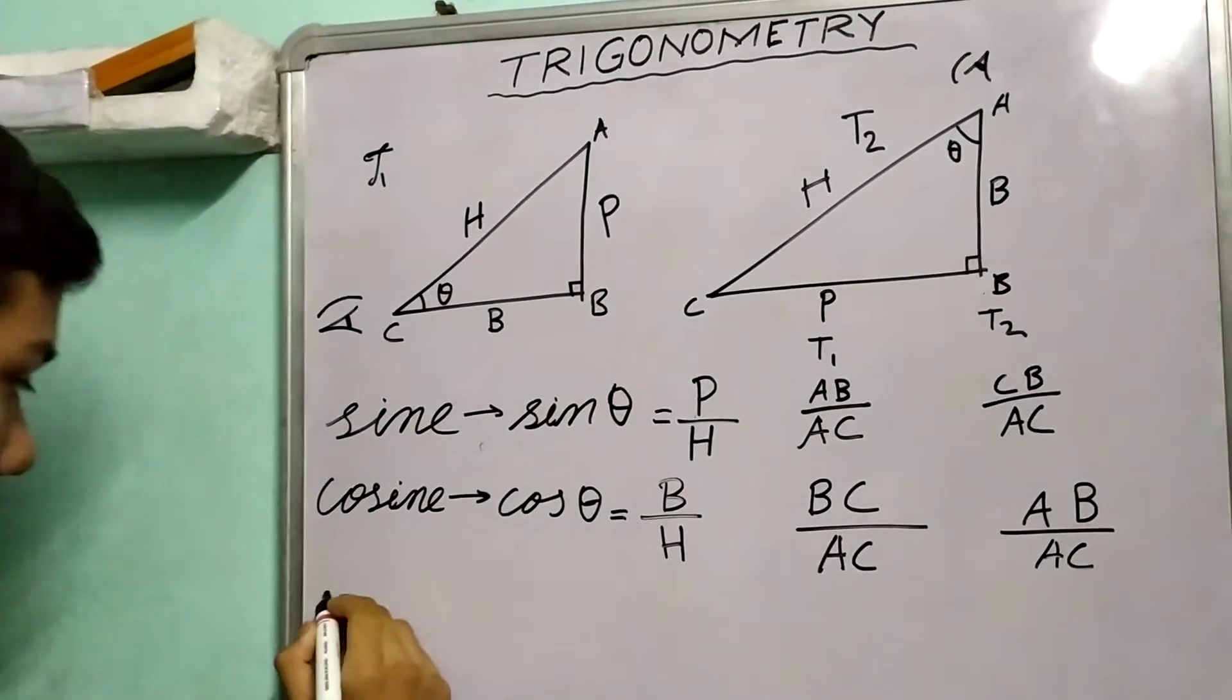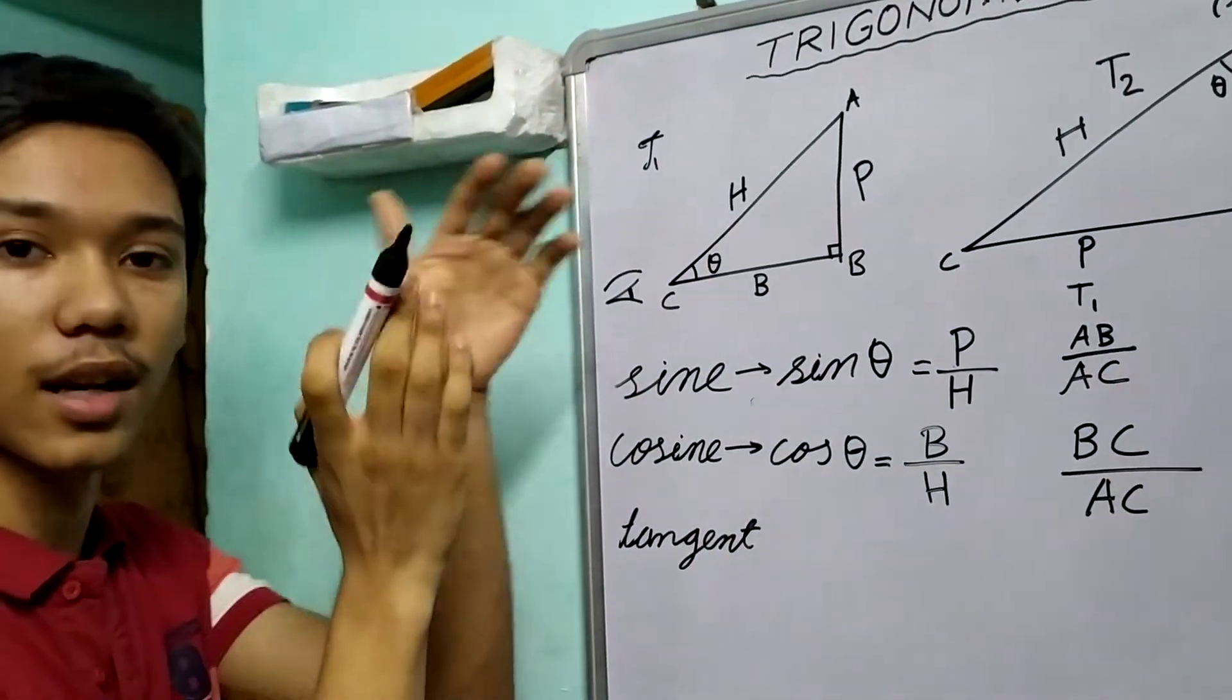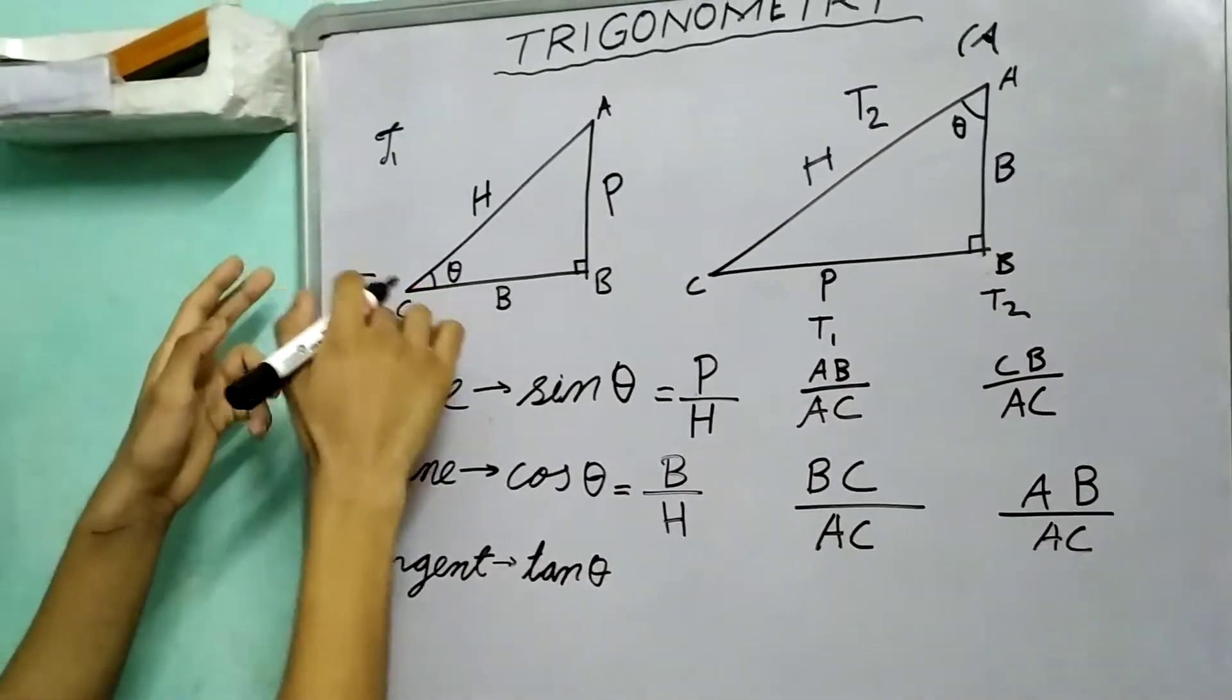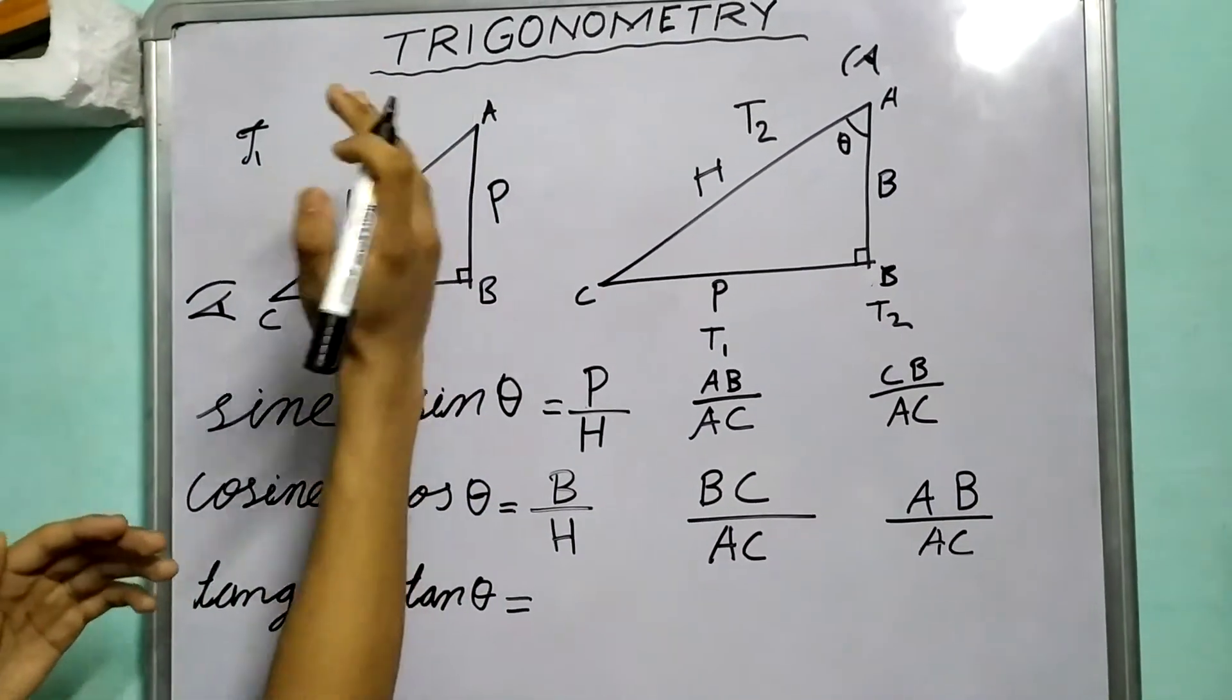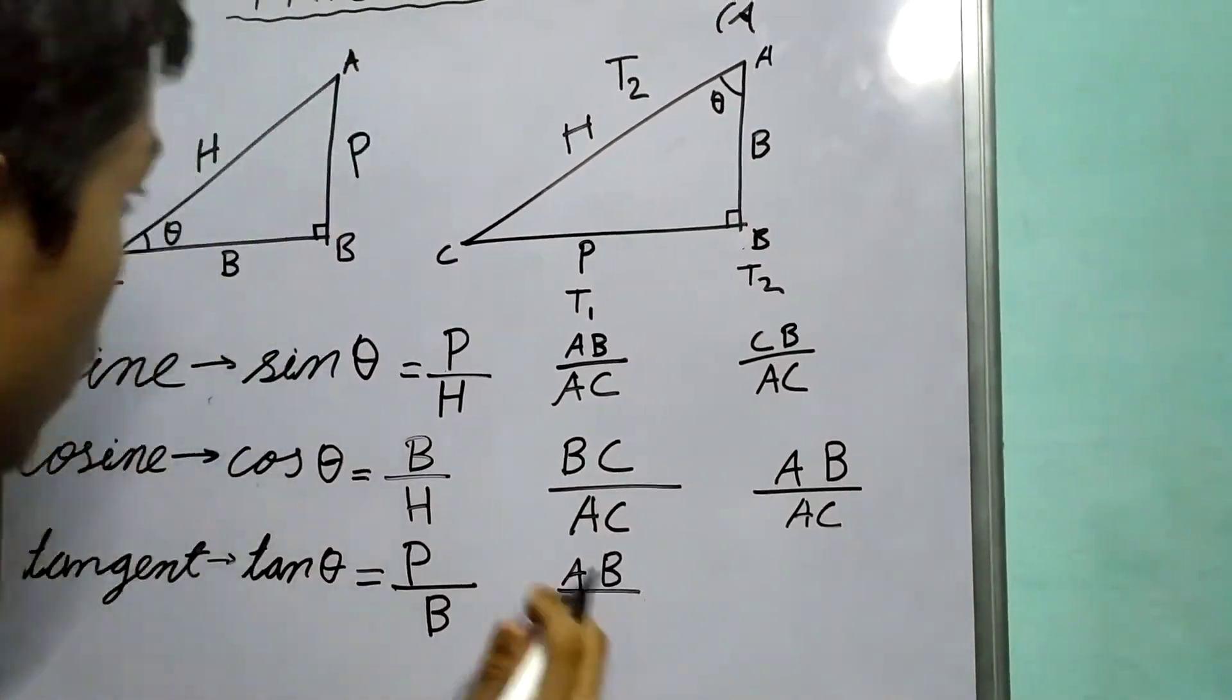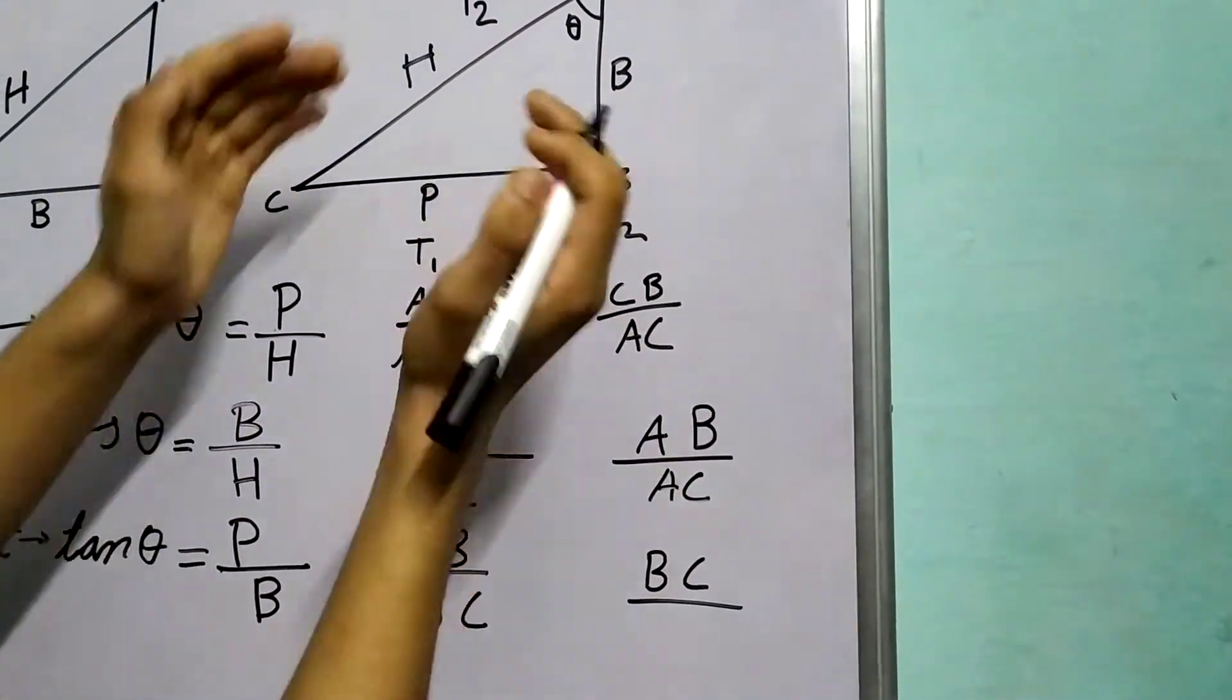Third trigonometric function, it is tangent. Most surely we will be remembering the circles part of tangent, the line perpendicular to the radius touching the circle at only one point. It is abbreviated as TAN, pronounced as tan. Tan of theta is the ratio of perpendicular to the base, so P upon B. In this case it's AB upon BC. And in this case, the perpendicular is BC upon AB, the base.